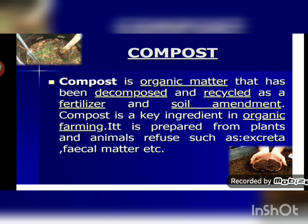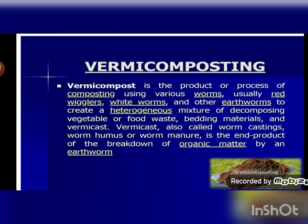There are two types of manure: compost and green manure. Compost is organic matter that has been decomposed and recycled as a fertilizer and soil amendment. It is a key ingredient in organic farming, prepared from plant and animal waste such as excreta and fecal matter. Another type is vermicompost.